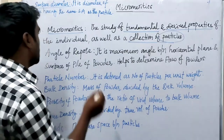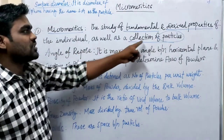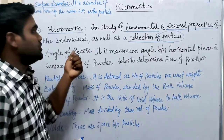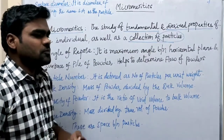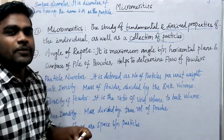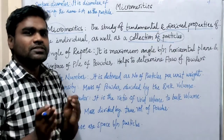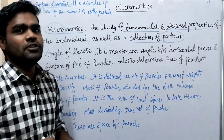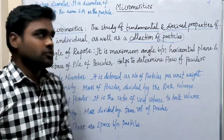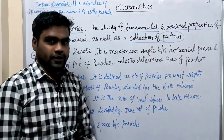Micromeretics is defined as the study of fundamental and derived properties of individual as well as collection of particles. So here we study the individual and collective properties of various particles — that is called micromeretics.